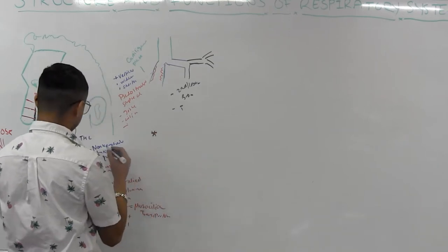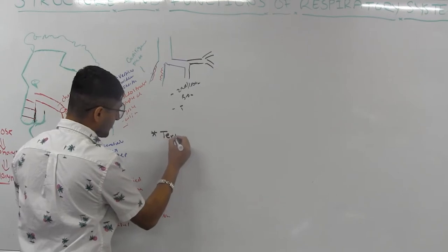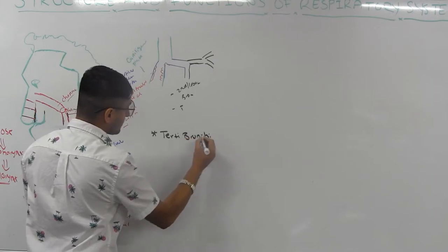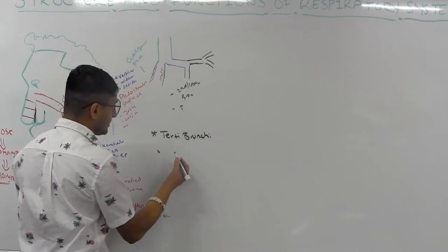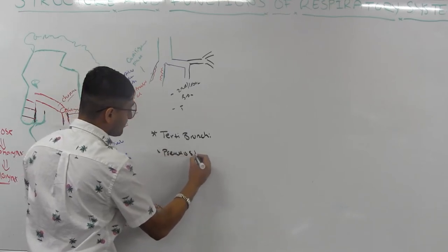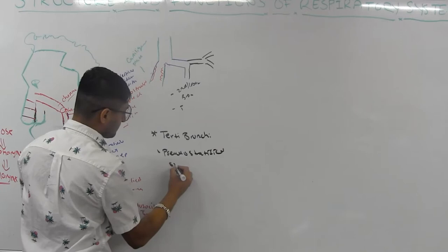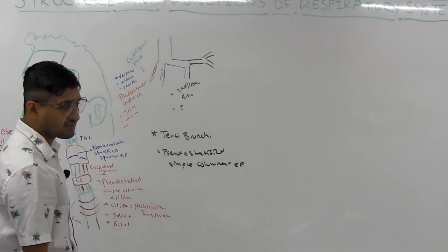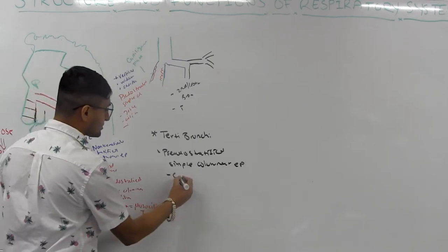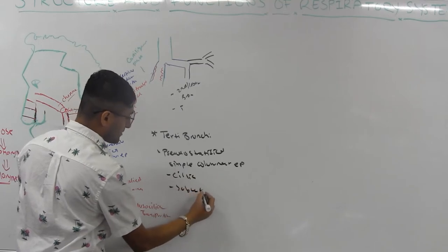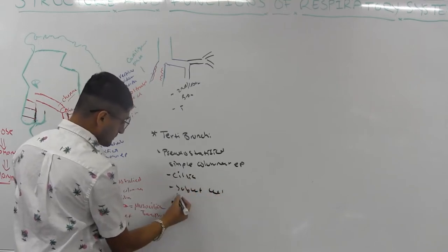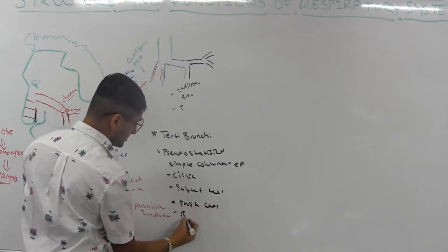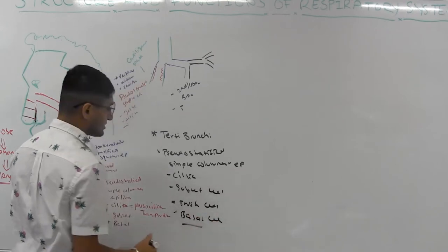All the way from trachea through primary, secondary, and tertiary bronchi, you're going to see pseudostratified ciliated simple columnar epithelium. They all have cilia, goblet cells, and basal cells present.